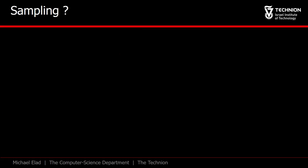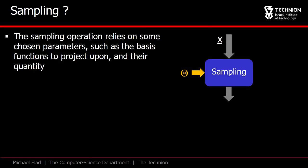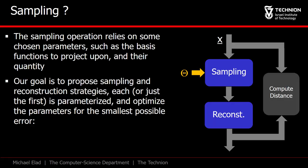What about sampling? When a signal is to be sampled, the general view of this operation is of a series of inner products of the incoming signal with some chosen basis functions. Given these inner product scalars, a reconstruction algorithm aims to recover the original signals, and our goal is to optimize the parameters of the sampler and the reconstruction algorithms, so as to minimize the error this process induces.